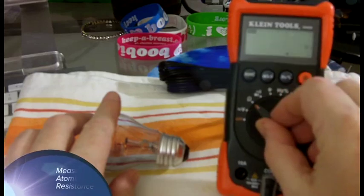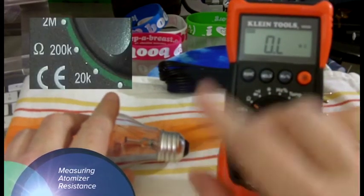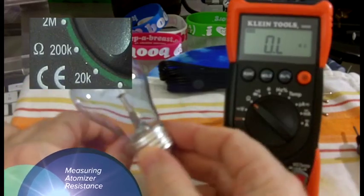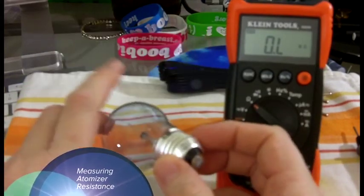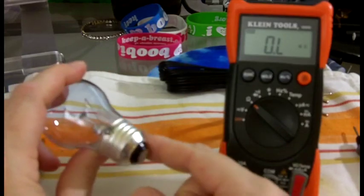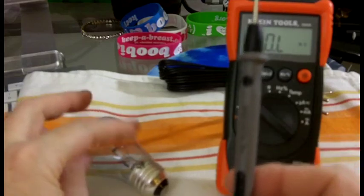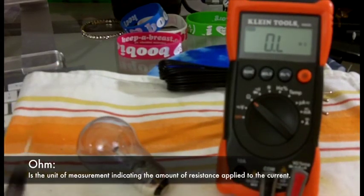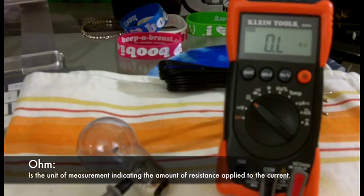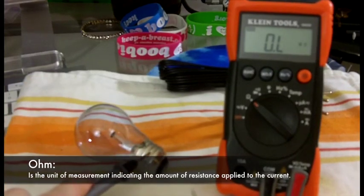The next thing that's really important for a vaper is measuring atomizer resistance or the ohms. Now this is a big old light bulb principle is the same. The threads are the ground. The center post is the positive. So following the same principles we used on the battery, we're measuring the amount of resistance that gets applied to the current by the atomizer or light bulb that's flowing through.